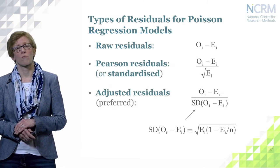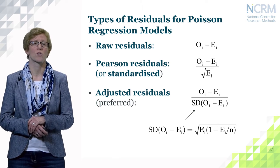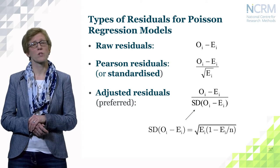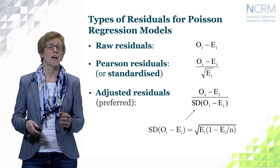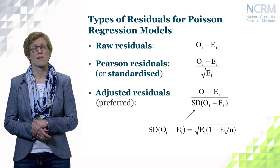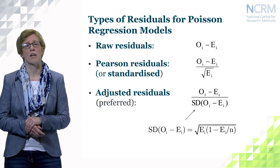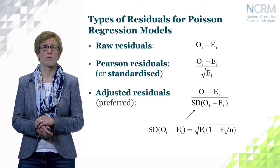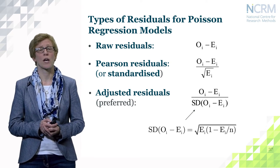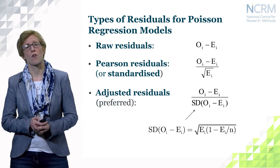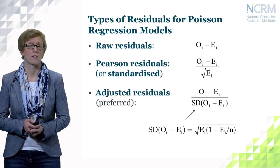I would like to introduce three different types of residuals for Poisson regression models. The raw residuals are simply the difference between the observed and the expected values. The Pearson residuals, or standardized residuals, are the raw residuals divided by the square root of the expected values. The adjusted residuals are defined as the observed minus the expected values divided by the standard deviation of those observed minus expected values.